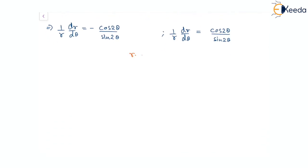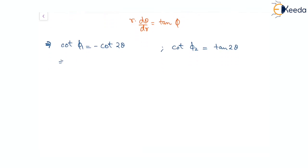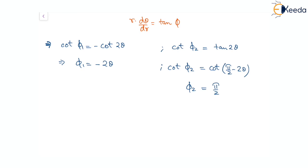Since r(dθ/dr) = tan φ, we identify: cot φ₁ = −cos 2θ / sin 2θ and cot φ₂ = tan 2θ. From the first expression, φ₁ = −2θ. For the second, cot φ₂ = cot(π/2 − 2θ), since cot(π/2 − 2θ) = tan 2θ. Therefore φ₂ = π/2 − 2θ.